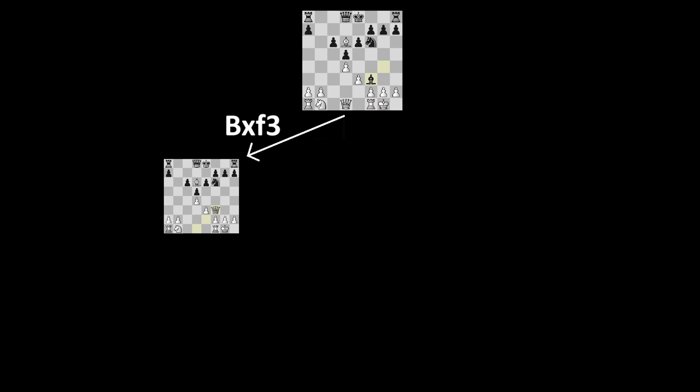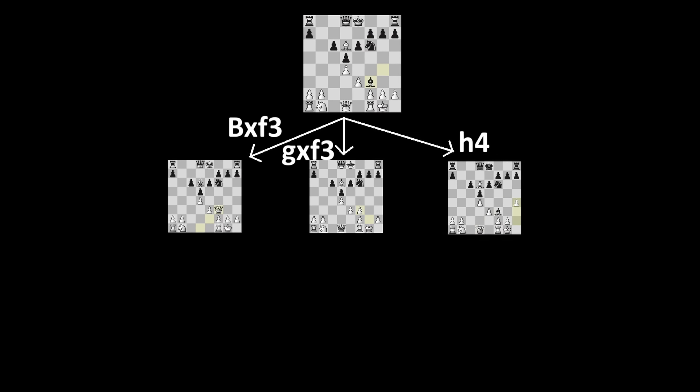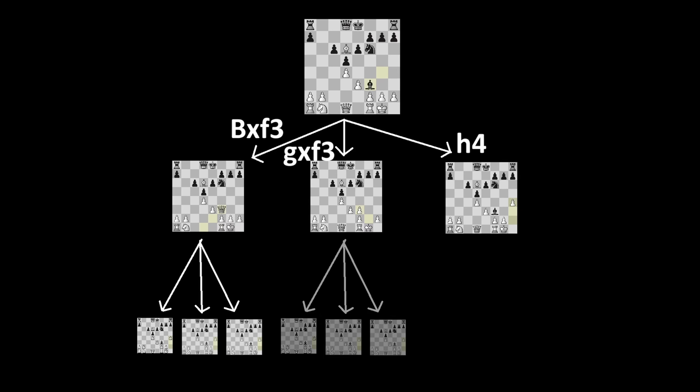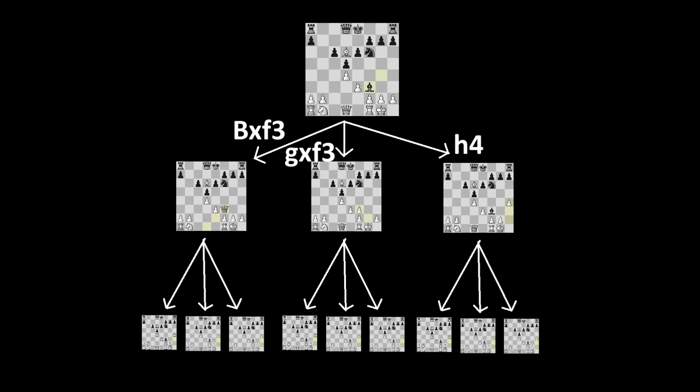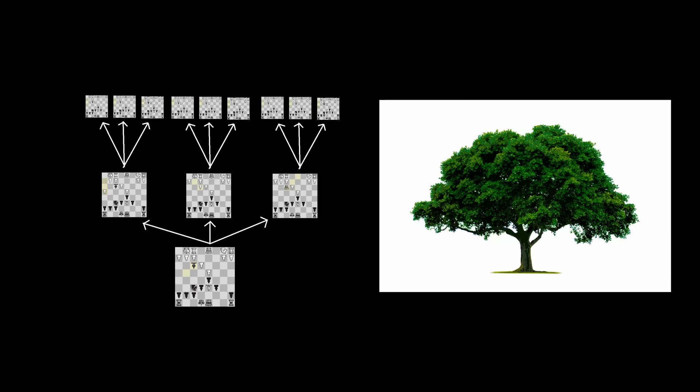The engine builds a structure of potential future positions by taking each position, or node, and splitting it up based on what happens when you play each move. When you flip it over, it kind of looks like a tree, which is why computer scientists call it a search tree.